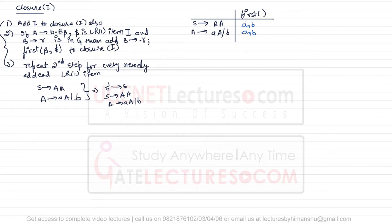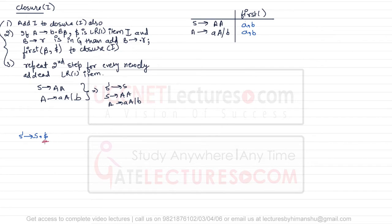We'll start by finding the closure of the start state. The initial state is S', so we write S' derives dot S, comma dollar. S is the start state and the lookahead symbol for the start state is always dollar. For those wondering how to find the lookahead symbol, make it a rule of thumb: if you start with the start state, the lookahead symbol is always dollar.